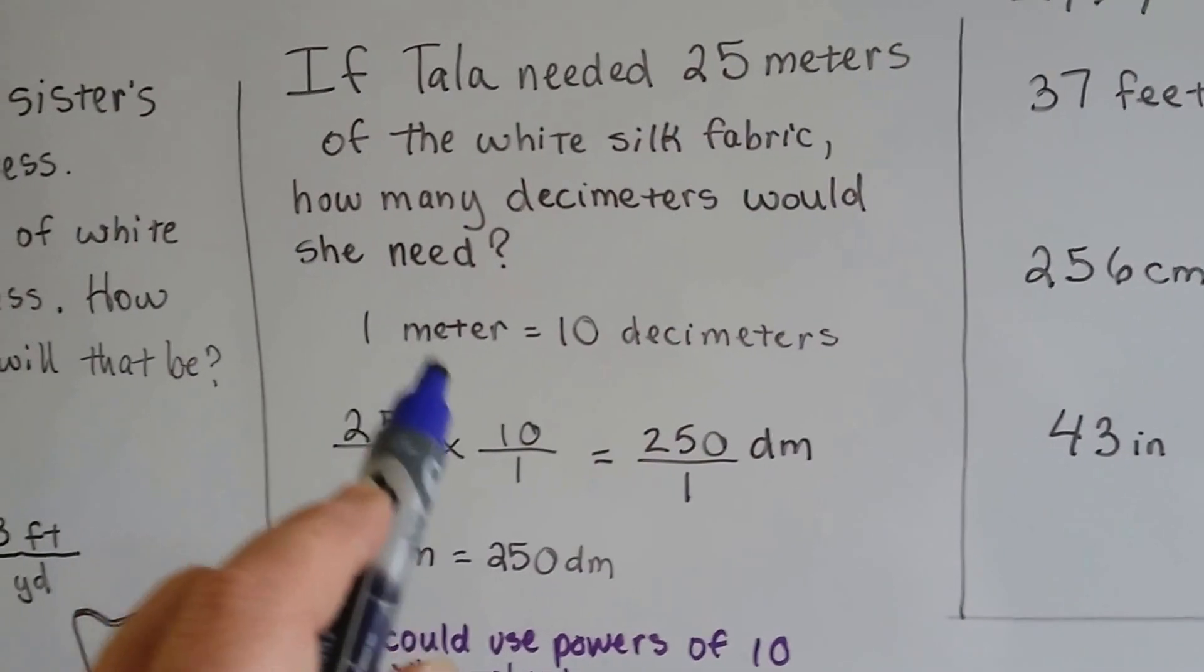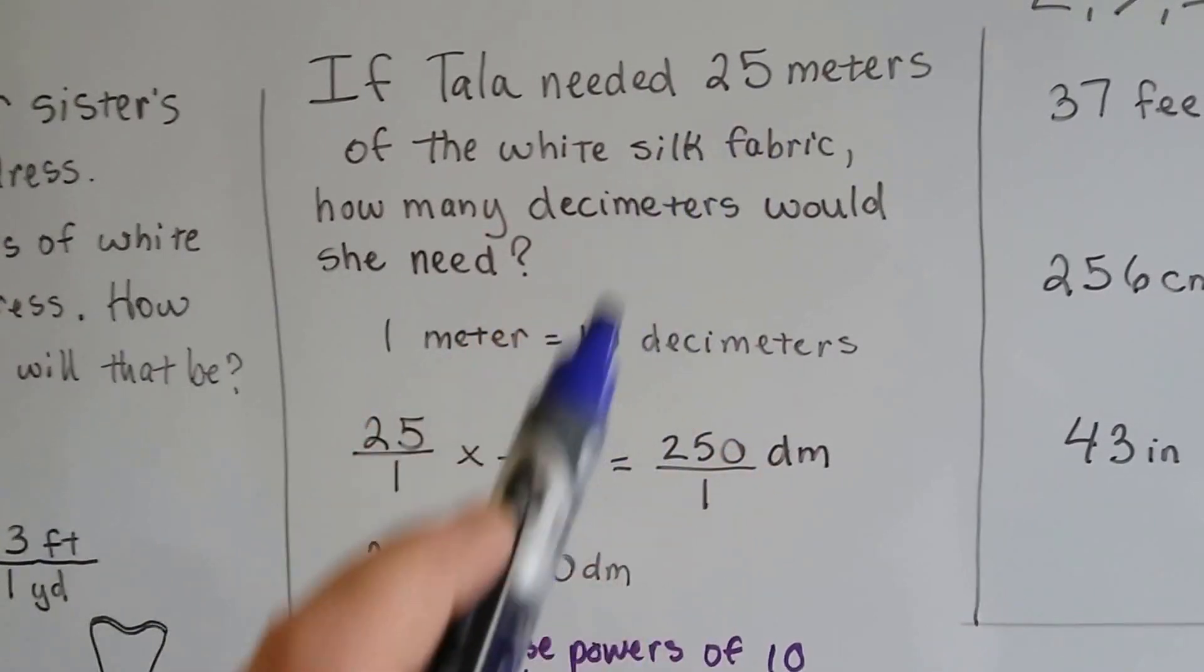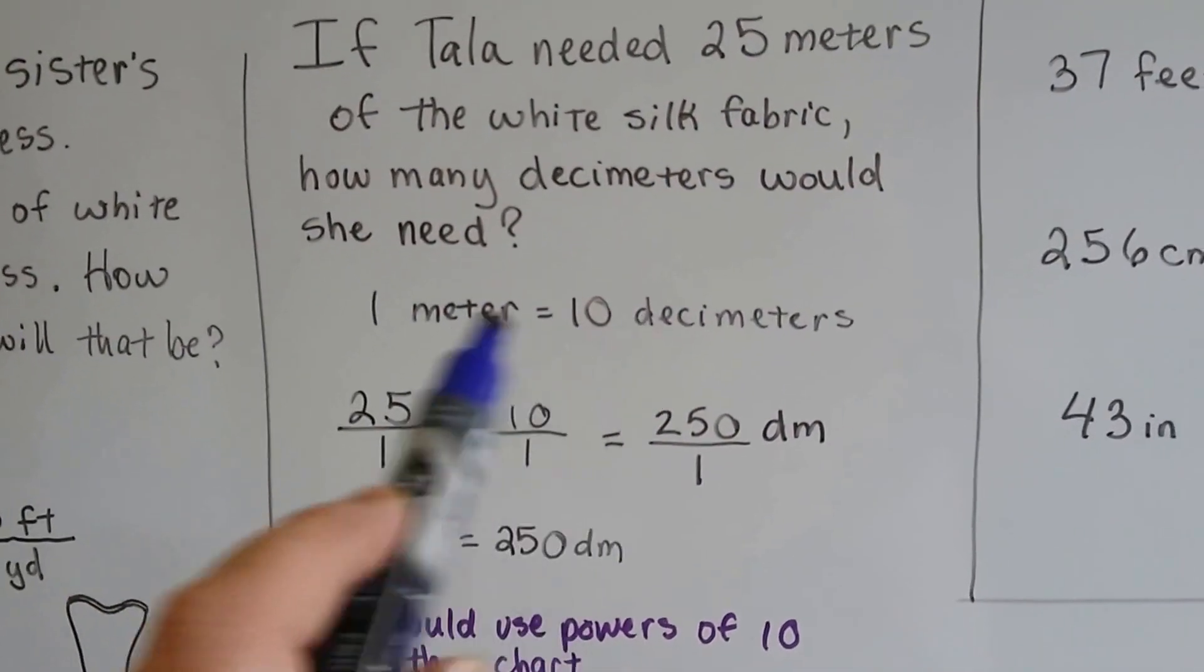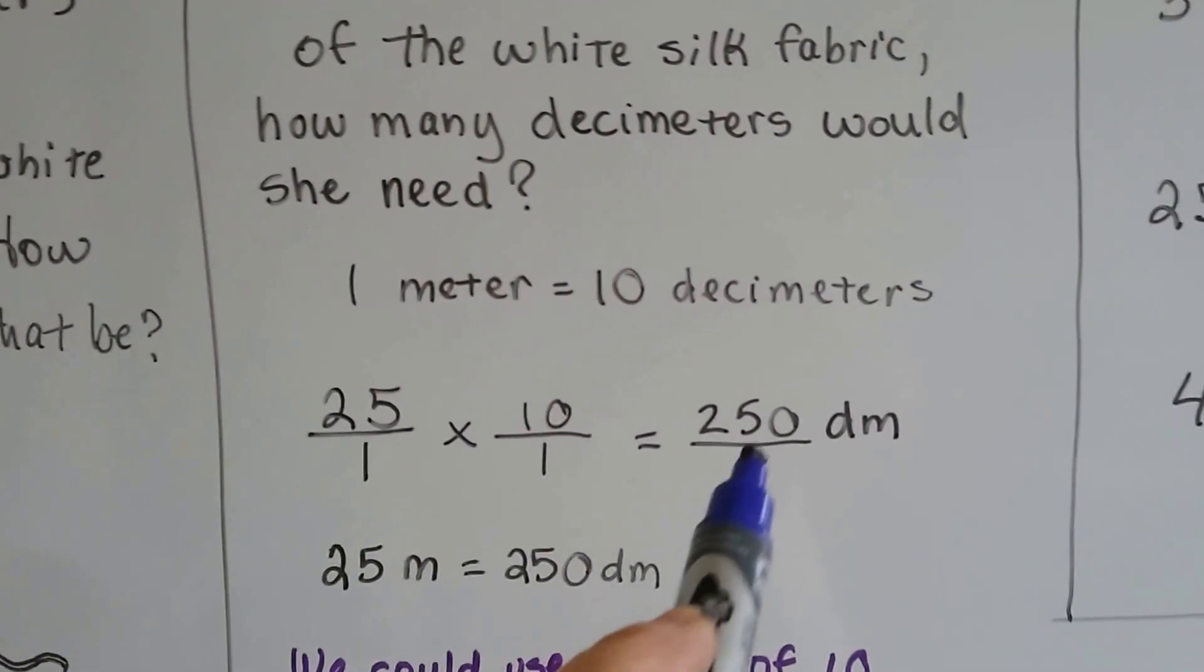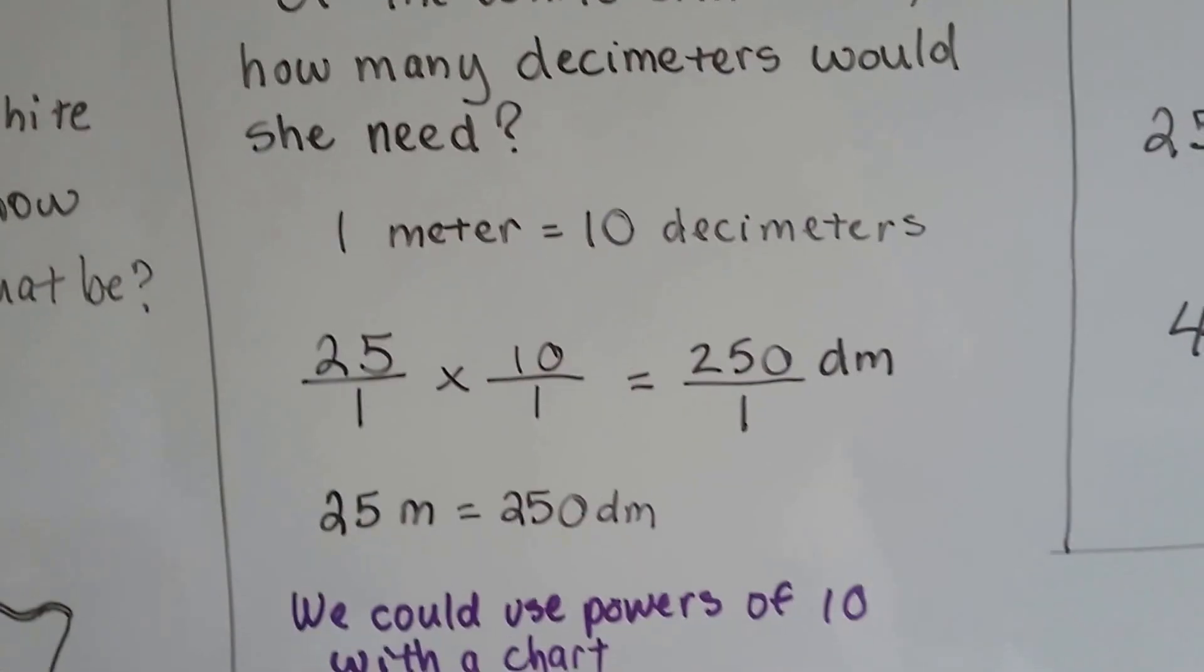Well, one meter is 10 decimeters. All we need to do is multiply the 25 times 10, right? That's an easy one. Metric is easy because we can just do powers of 10. It's 250 decimeters.